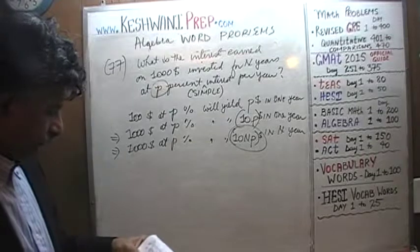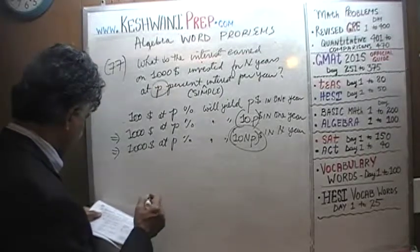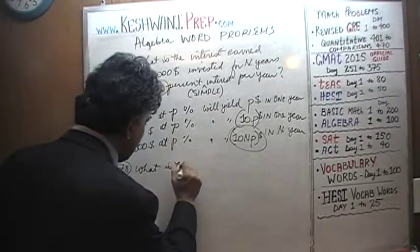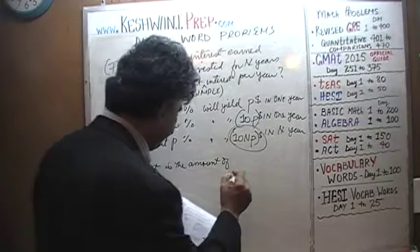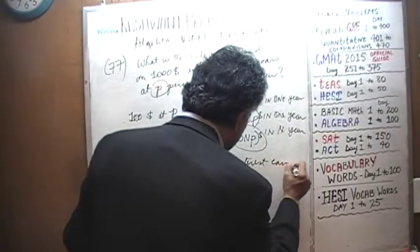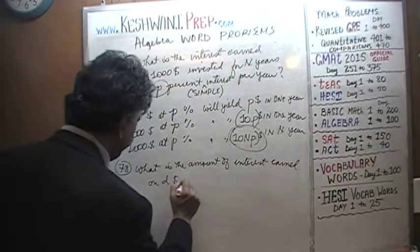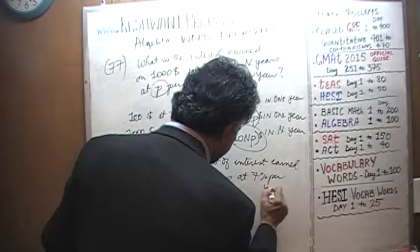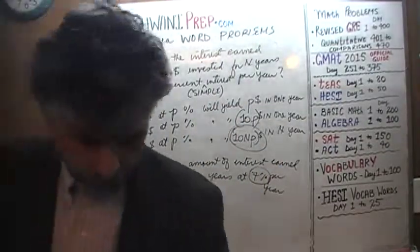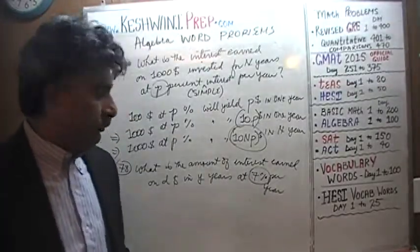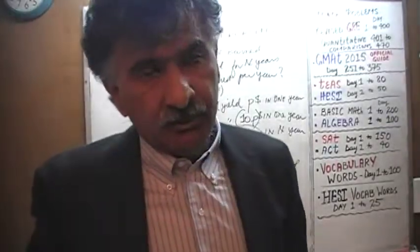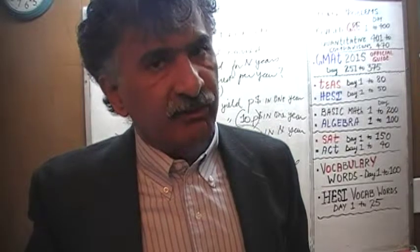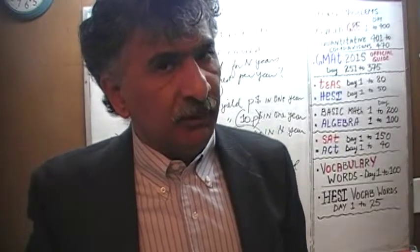Let's do the next one. Problem number 78: what is the amount of interest earned on D dollars in Y years at 7% per year? As a notation, if a problem simply says 7% and does not specify compound interest, it is assumed by default to be simple interest. Had it been compound interest, it would have said so explicitly.